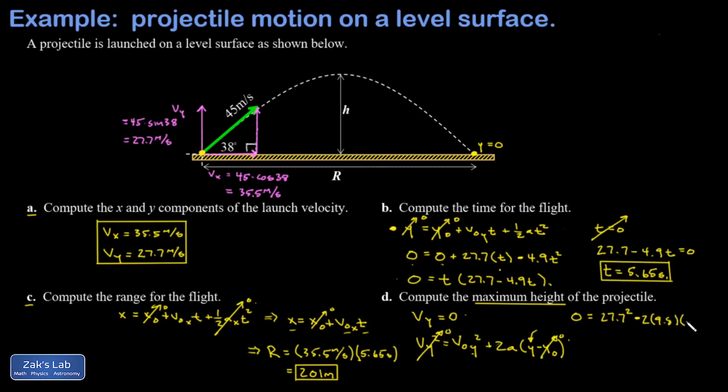Now I just have to isolate that y. So I'm going to add this term to both sides of the equation and then divide by twice 9.8. So I type in 27.7 squared divided by parentheses twice 9.8, and rounding to three sig figs I get a y value of 39.1 meters.